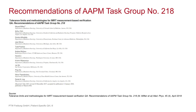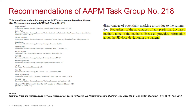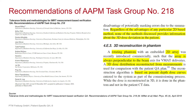3D measurements are also already mentioned in the AAPM TG-218 report. They present the possibilities for two-dimensional patient-specific QA and state that regardless of the advantages of any particular two-dimensional-based method, none of the methods discussed provides information about the 3D dose deviation in the patient. Additionally, they describe a system similar to our Octavius 4D: a rotating phantom with a two-dimensional array always perpendicular to the beam, yielding a 3D dose distribution reconstructed only from measurements based on percent depth-dose curves.